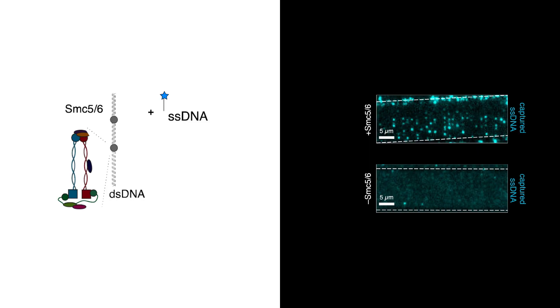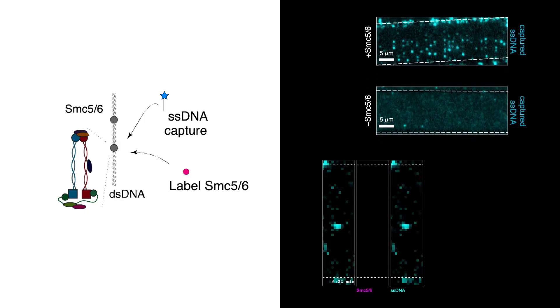So to prove that this is really SMC56 that targets this recruitment of single-stranded to double-stranded DNA, we, as a second step, label SMC56 with a quantum dot. And this is shown here, where you can see the captured single-stranded DNA that fluctuates on a tethered double-stranded DNA.